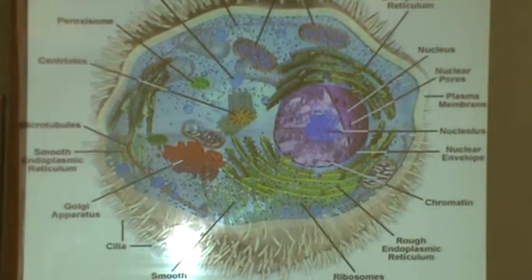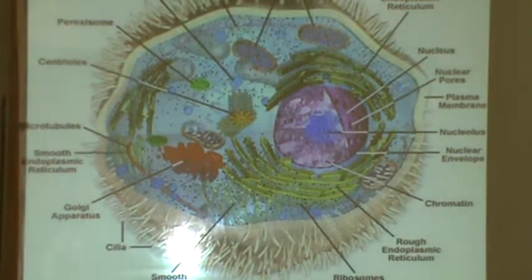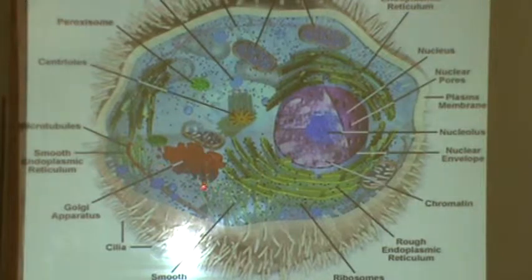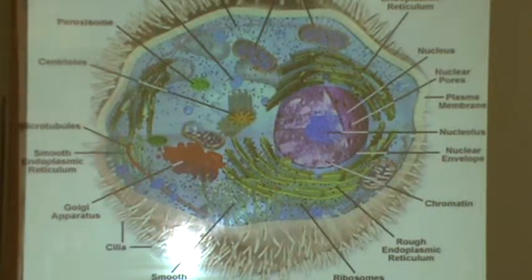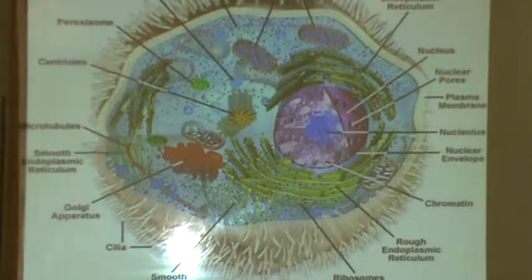It wasn't until researchers at Imperial College in London discovered the mitochondria and the lysosomes. And they didn't find it with a microscope — they found it by taking cells, mashing them up, and spinning them down with a centrifuge. So all these things — all these machines — have to be present, along with the energy to operate them. They have to know what to do — there has to be a blueprint.